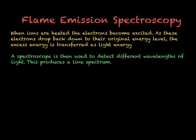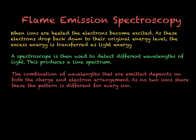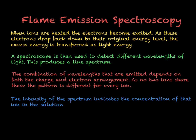The combination of wavelengths emitted by an ion depends on its charge and its electron arrangement — we need to look all the way back at the initial electron arrangement from topic 1. Since no two ions have the same charge and the same electron arrangement, different ions emit different wavelengths of light. Each ion therefore produces a different pattern of wavelengths, has a different line spectrum, and hence a different colour.